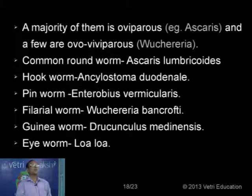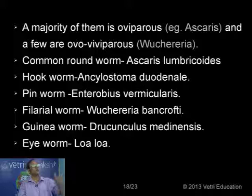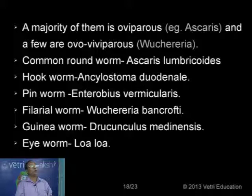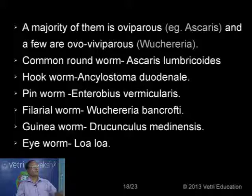We can classify organisms based on the nature of reproduction. A majority are oviparous — they lay eggs. For example the common roundworm of humans, Ascaris lumbricoides. But in the case of the filarial worm, called Wuchereria bancrofti, it is ovoviviparous — they give birth to young ones. In oviviparous forms, development is completed inside the egg before the eggs are released into the environment.